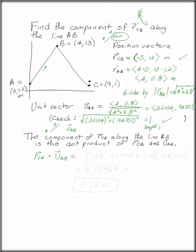Remember, the dot product is just the x components or the i components multiplied together plus the j components multiplied together. In this case, what we've got is negative 5 times .32104 plus 12 times .94707. That is 9.75964 meters or rather 9.76 meters to three significant digits with a box around it.